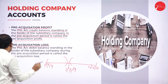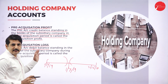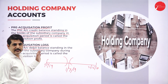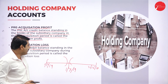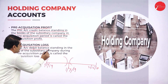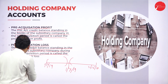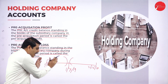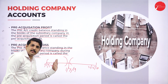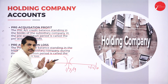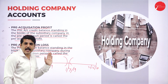Pre-acquisition loss means the profit and loss account debit balance standing in the books of the subsidiary company during the pre-acquisition period — it is called pre-acquisition loss. A loss will appear on the asset side of the balance sheet, while a profit appears on the liability side. Whatever loss belongs to the pre-acquisition period is called pre-acquisition loss, also known as capital loss.